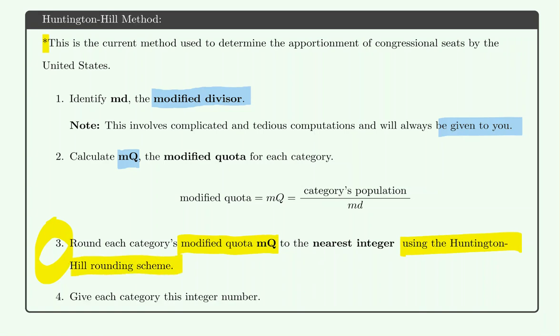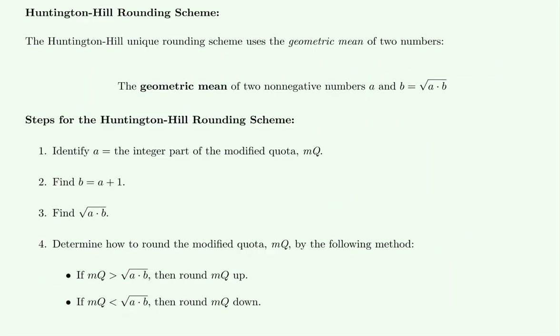In the Jefferson method, you just round down automatically. But the Huntington Hill rounding scheme is a bit more complex. Let's look at this rounding scheme.